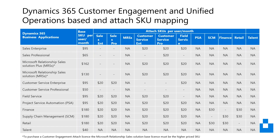This slide details more around how the base licenses and add-on SKUs work. For example, if you're looking at purchasing Sales Professional and Customer Service Professional, you would need to purchase the Sales Professional SKU at $65 as your base, then add on the Customer Service SKU at $20. You cannot add a Sales Professional SKU onto a Customer Service Professional base SKU because the Customer Service Professional base SKU is only $50 — you always need the most expensive as your base. The table shows everywhere there is a line where you can purchase the add-on, and the Microsoft dollar price of what it would cost.